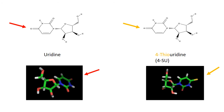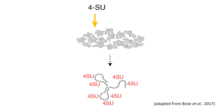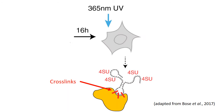PARCLIP is a method that utilizes nucleoside analogs such as 4-thiouridine, or 4-SU. In PARCLIP, 4-SU is fed to cells, which then incorporate it into RNA. These cells are then exposed to UV, which links protein and RNA to each other at sites where 4-SU interacts with the protein.